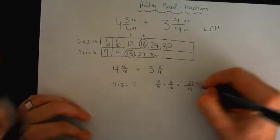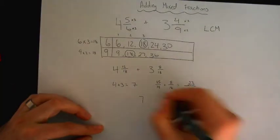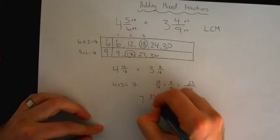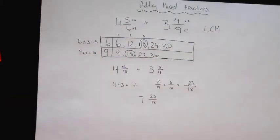Now can we leave it like this? 7 and 23 over 18. Can we leave it like that? Aaliyah, what do you think? No. No, what should I do?